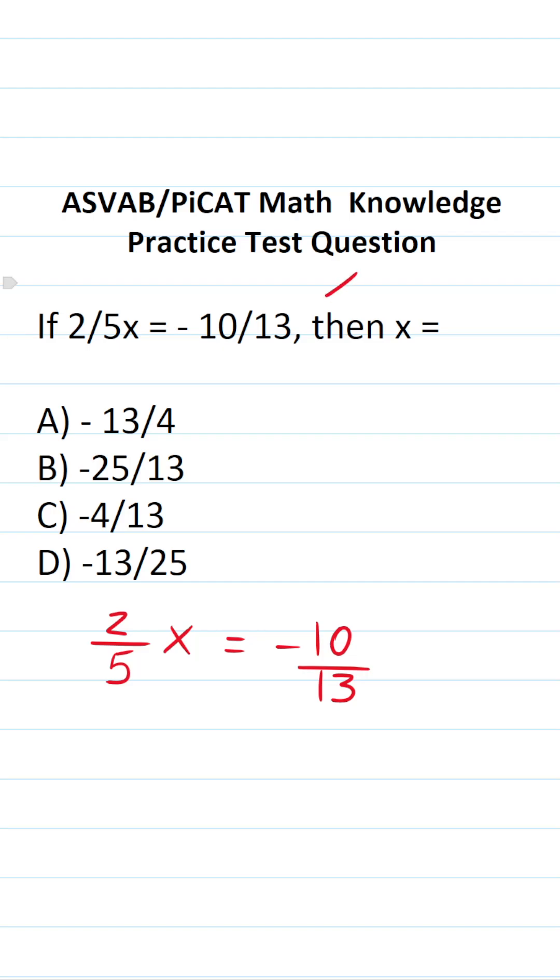We're solving this equation for x, so we want to get x equal to something by itself. The first thing we have to do is clear this two-fifths that's in front of x.